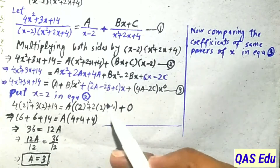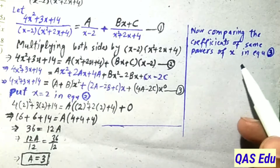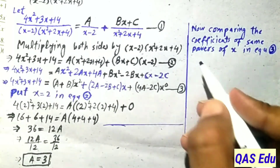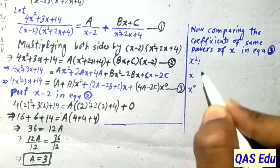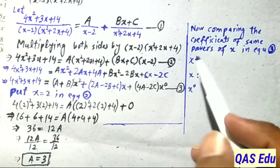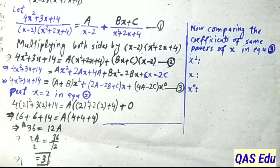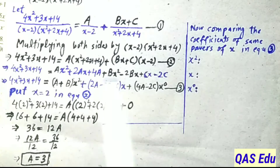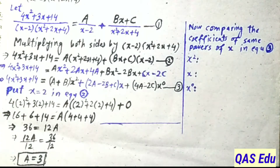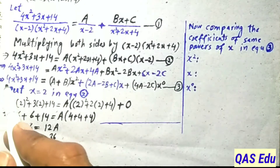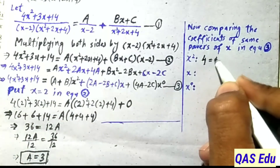Now to find the remaining constants B and C, we apply the method of comparing coefficients of like powers of x in equation number 3. We have three powers: x², x, and x⁰ (constant). Comparing x² coefficients: left side = 4, right side = A + B. Comparing x coefficients: left side = 3, right side = 2A - 2B + C.